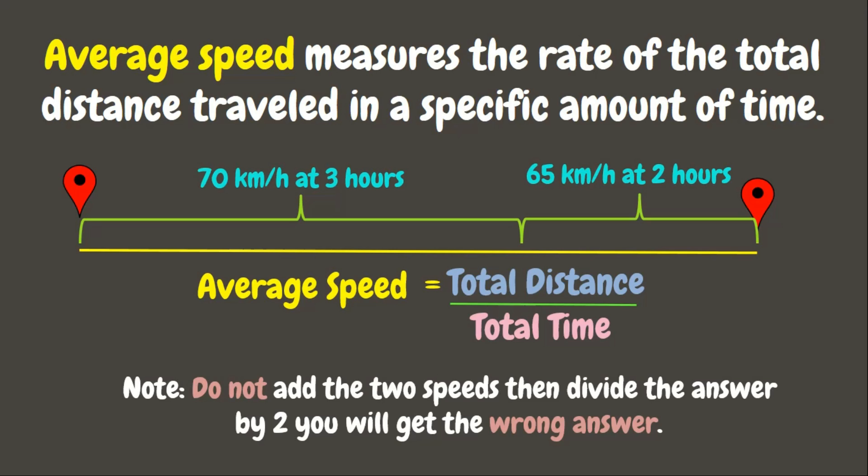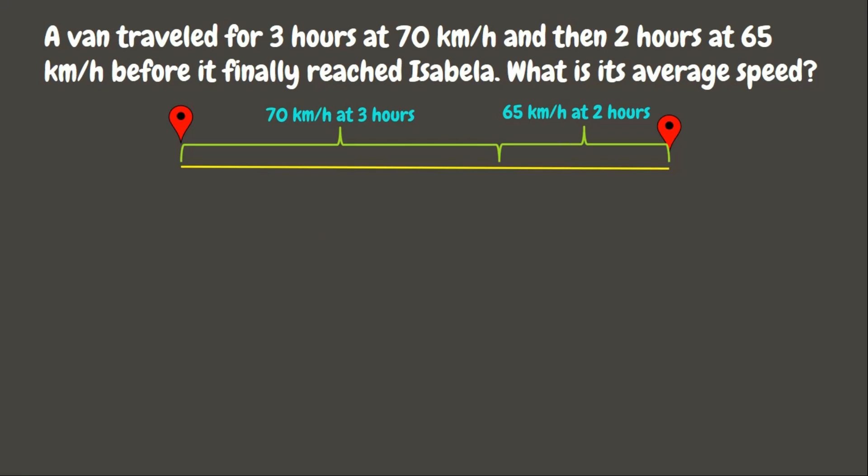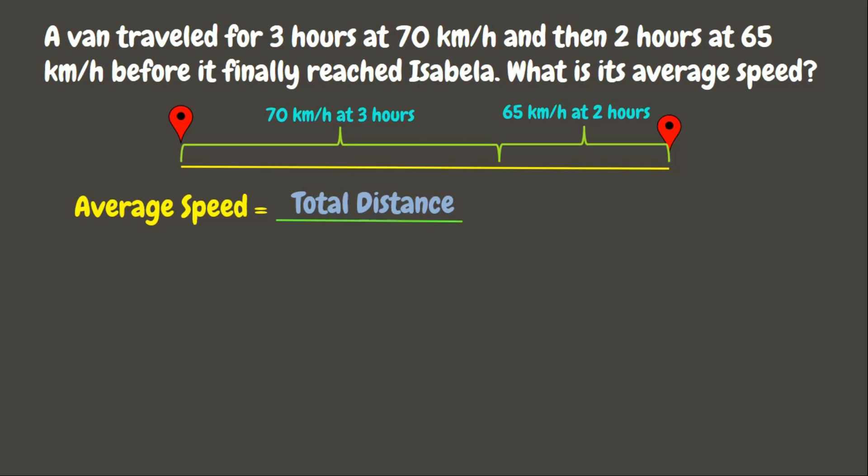Now let's go and try to solve our problem. To get the average speed, we simply need to divide the total distance traveled by the total time consumed. First, let us get the total distance by adding up all the distances traveled. Here in the problem, the distances are not given, so let's solve for them first.